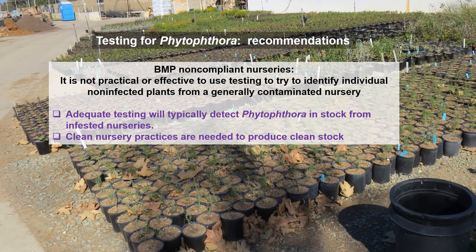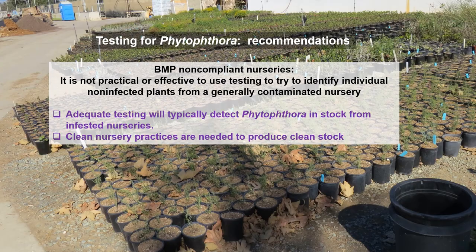In non-BMP-compliant nurseries, it's really not effective or practical to try to pick out which plants are infected and which ones are not. Some people think they can simply test and throw away infected plants and keep the rest — but that's not practical and it doesn't really work, partly because we can still develop false negative results. You can do adequate testing in these nurseries to document that you have Phytophthora contamination and help convince people to clean up their practices. But generally, clean nursery practices are what guarantee clean stock — it's not the testing that cleans it up; it's making sure that you're clean when it's produced to begin with.